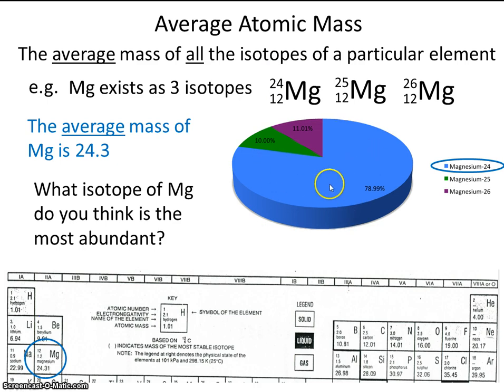The blue here is represented by the isotope magnesium-24, and you can see that it's significantly more prevalent than the other two isotopes of magnesium. So once again, the number on the periodic table, that's the average atomic mass.